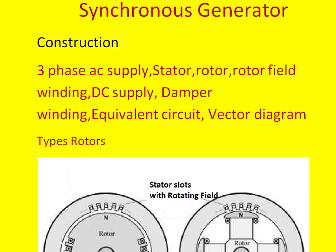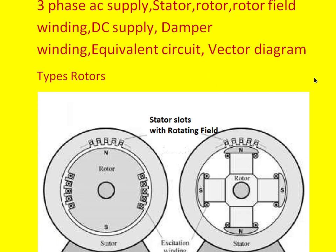To summarize: a generator converts mechanical energy into electrical energy. In the synchronous generator the input is mechanical and the output is AC electrical output. The terms covered include: three-phase AC supply, stator, rotor, different types of rotors, stator winding placement, yoke, input to the rotor, rotor field winding, DC supply to the rotor winding, the equivalent circuit, and the vector diagram of the synchronous generator.